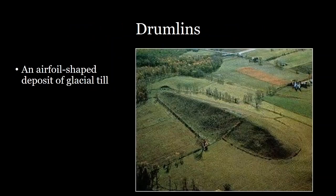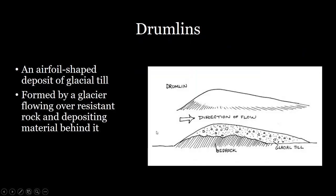Next we have drumlins. Drumlins are very cool features you can see throughout different landscapes. They're airfoil-shaped deposits of glacial till — this example is in England, where the Ice Age covered parts of northern UK with ice. Drumlins form when a glacier is flowing over a particularly resistant rock that is not being eroded, and you have glacial deposits of till behind it.